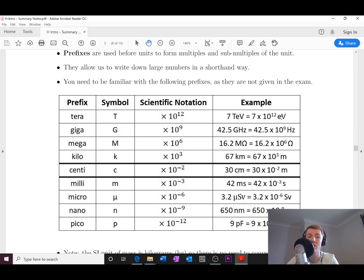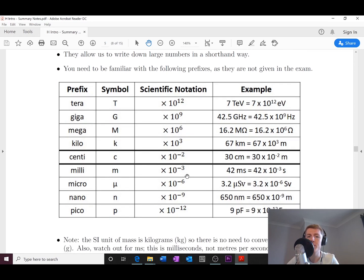And if we move down the way this time, you'll see that we have 10 to the minus 3 is milli, 10 to the minus 6 is micro, 10 to the minus 9 is nano, and then the new one is pico, which is 10 to the minus 12.